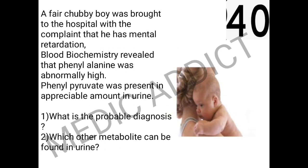The next spot is a clinical case: a chubby boy was brought to hospital with a complaint of mental retardation. Blood biochemistry revealed that phenylalanine level was abnormally high and phenylpyruvate was present in appreciable amounts in the urine. These last two findings are the key catching points to answer this spot.